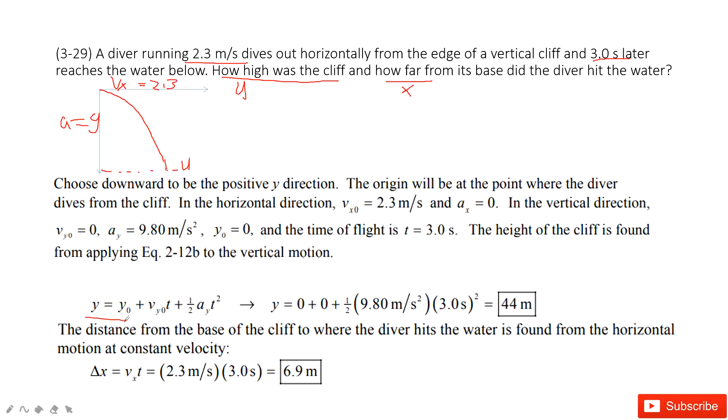We use the equation y equals y initial zero plus the initial velocity in y times t, one half a t square. There, the initial velocity in y component is zero. And then this is one half g t square. We get it. And in the displacement in x component, we can see.